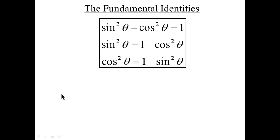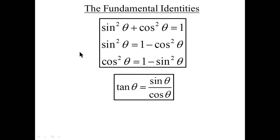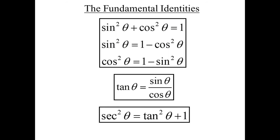The fundamental identities — here's the collection. These are the Pythagorean identities: sine squared plus cosine squared equals 1 in three flavors — they're just rearrangements of each other. Tangent equals sine over cosine. And secant squared equals tangent squared plus 1.